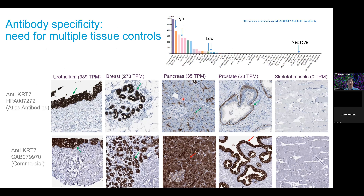In the upper panel, you can see the immunochemical staining with our keratin-7 antibody, HPA7272, where we do see expected cytoplasmic expression — strong expression — in urothelial epithelial cells and in breast glandular cells. Importantly, in these low-expressing tissues such as pancreas and prostate, we see a specific staining pattern in the intercalated ducts of the pancreas and in the basal cell layer of the prostate, while skeletal muscle, which is supposed to be negative based on the mRNA expression, is negative, as expected.